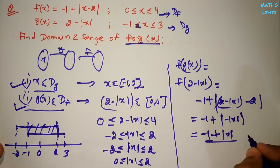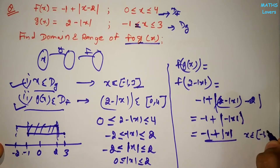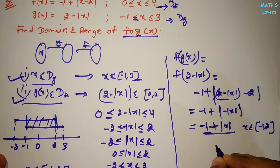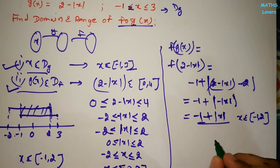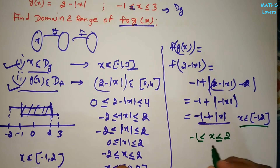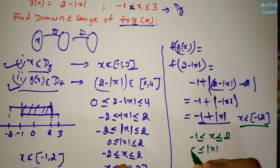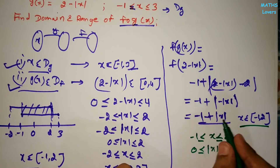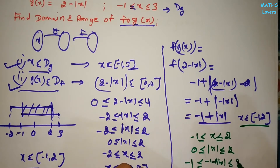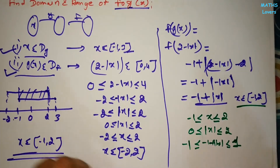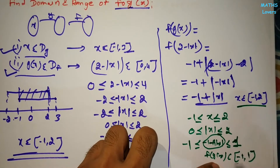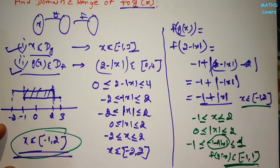The domain is x ∈ [-1, 2]. For |x| with x ∈ [-1, 2]: |x| ranges from 0 to 2. Therefore, -1 + |x| ranges from -1 + 0 = -1 to -1 + 2 = 1. So the range of f(g(x)) is [-1, 1]. Domain is [-1, 2] and range is [-1, 1].